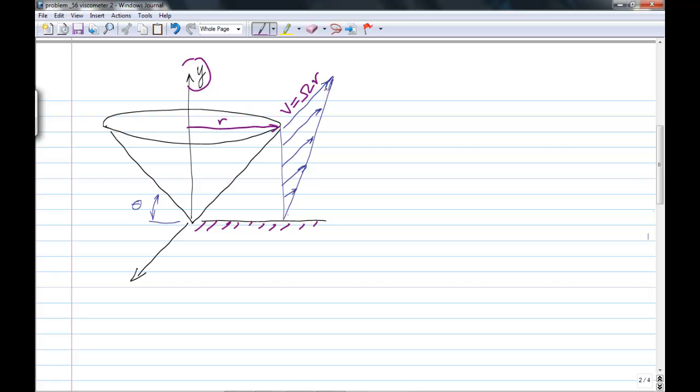And then the velocity decreases linearly, and I've shown the arrows here, until we get down to the fixed surface, where because of the no-slip condition, we have no velocity. So I'll write in here that we have no slip. Just like up at the cone, we have no slip.